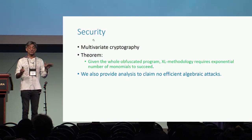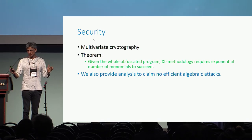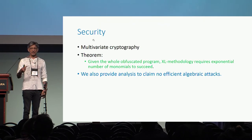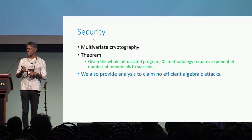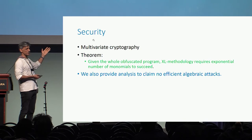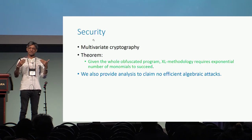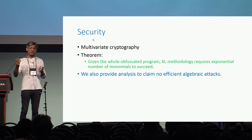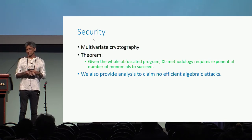We actually prove a theorem that given all the information you get from the obfuscated program, whatever polynomial equations you can build, generic Gröbner basis techniques are going to be inefficient. This would include the Kipnis-Shamir relinearization techniques and their generalization, called the XL methodology by Courtois, Shamir, and Patarin. We prove that such generic Gröbner basis techniques will require an exponential number of monomials, and thus exponential time. We also give arguments as to why algebraic techniques in general will not succeed.